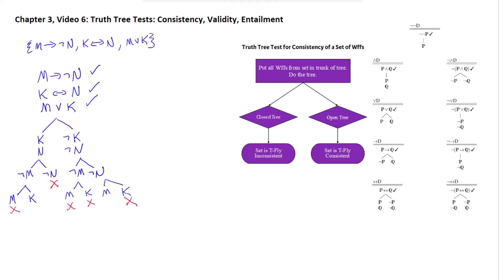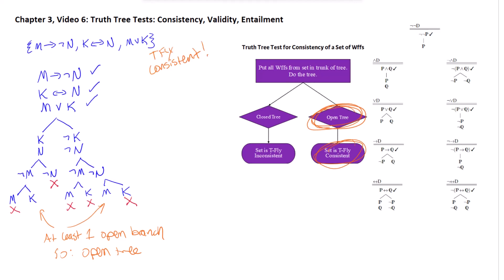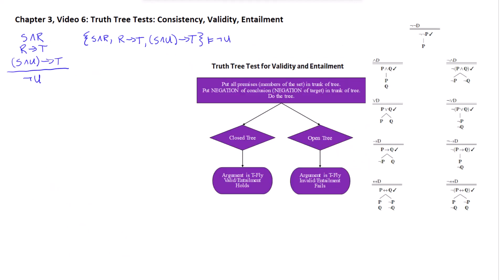We wind up with a tree that has at least one open branch, so we have an open tree, and the set is truth-functionally consistent.